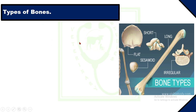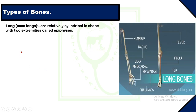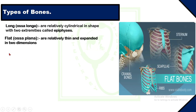Types of bones: there are various types of bones in the animal body — long bones, flat bones, short bones, irregular bones, sesamoid bones, and in birds, pneumatic bones. The first type is long bones, or ossa longa — they are long, relatively cylindrical in shape, with two extremities called epiphyses. Long bones include the femur, humerus, metatarsals, and metacarpals. Their functions are to act as levers and to aid in support, locomotion, and prehension.